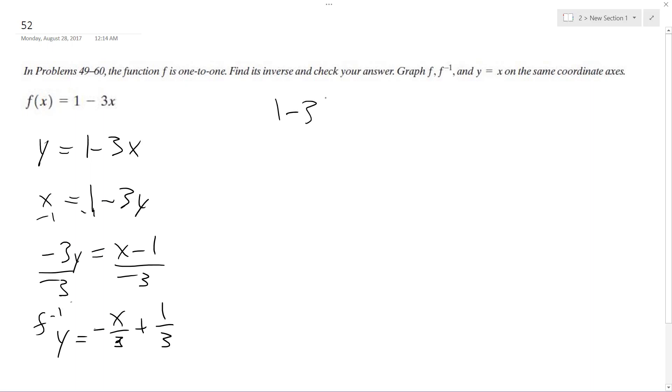So 1 minus 3 times negative x over 3 plus 1 over 3. So 1, and then remember to distribute this minus sign here. This becomes plus 3x over 3 minus 3 over 3. So this becomes 1 plus x minus 1. The 1's cancel out, and you just get x. So it is the inverse.